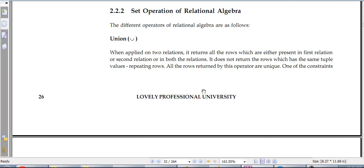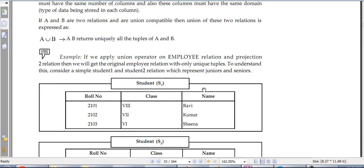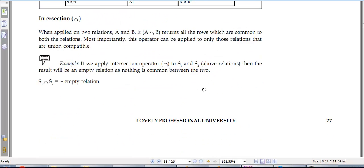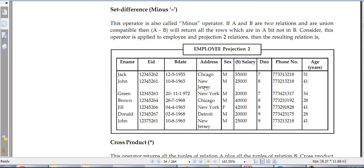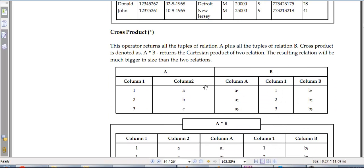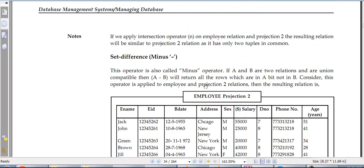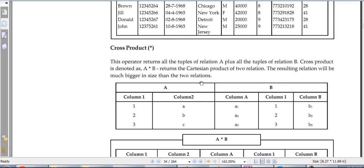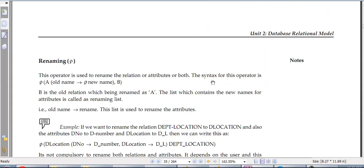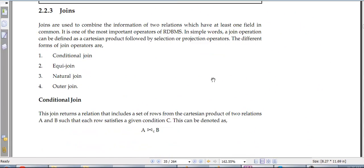Then you have got the union in the relational algebra. And when you apply union you get a combination of both of them. And intersection, this is the same as a Venn diagram that we do. And then we have the cross product, set difference, and renaming.